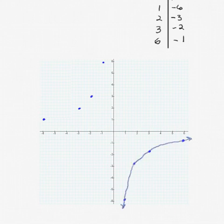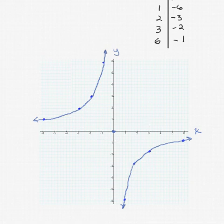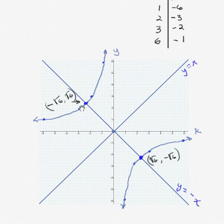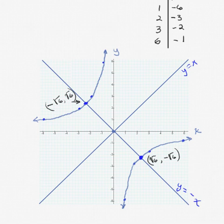We draw in our two branches of the hyperbola, remembering that the x and y axes are the asymptotes — getting closer and closer, never crossing, never touching. The center is at (0, 0). The conjugate axis of symmetry is y equals x, and the transverse axis of symmetry is y equals the opposite of x. Since k = −6, the vertices are at (−√6, √6) and (√6, −√6). That's all we're going to do with rectangular hyperbolas.